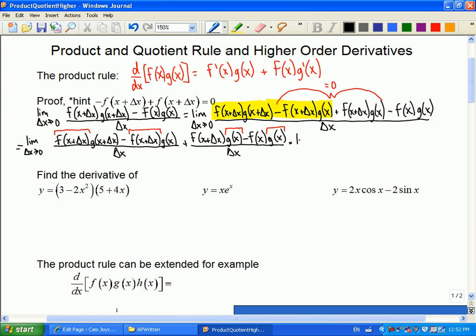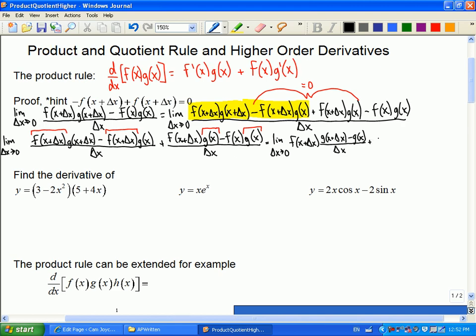So all I did was split up those two fractions. Because now what I'm going to want to do is factor out some of the common pieces. In the first one I'm going to factor out this f(x + Δx), and in the second one I'm going to factor out this g(x).